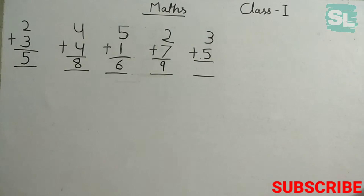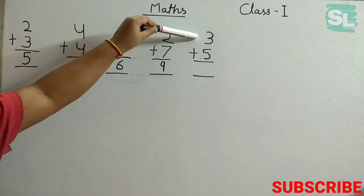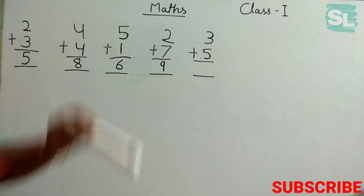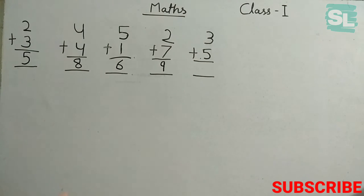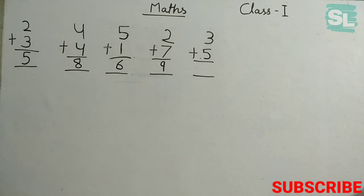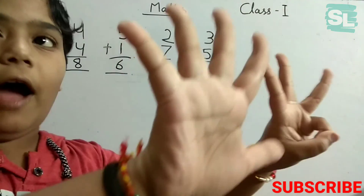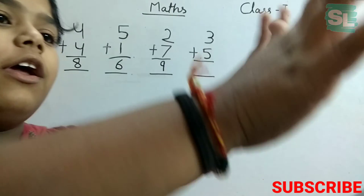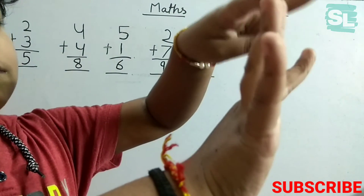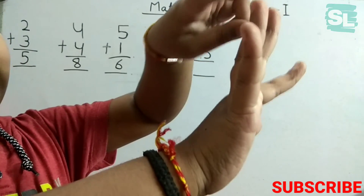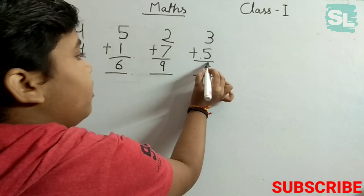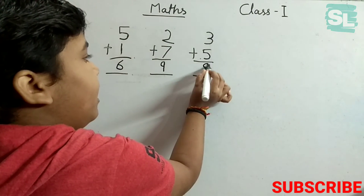The next question is 3 plus 5. So let's count it by fingers: 3 plus 5. 1, 2, 3, 4, 5, 6, 7, 8. So our answer will be 8.